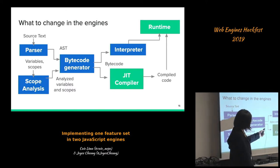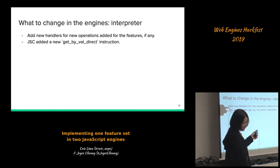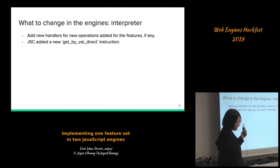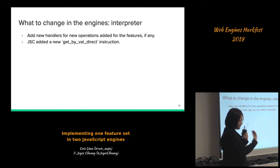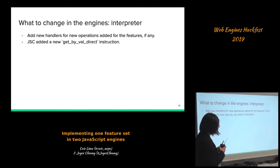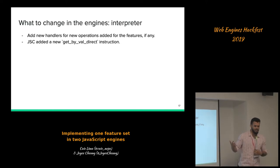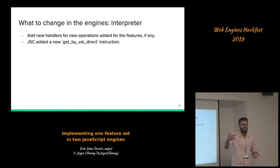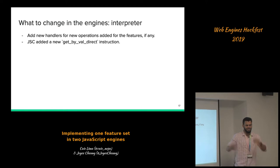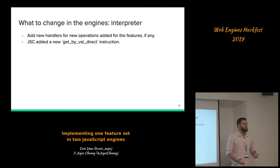After that we also need to modify the interpreter. In some cases there are new operations added, for example for the private field access, so we need to add new interpreter handlers for them. In the case of JavaScriptCore, we needed to create a new instruction called 'op-get-by-val-direct'. This implements the semantics where if a private field is not in the object, instead of returning undefined we throw a TypeError. That was one of the reasons to create this new operation.